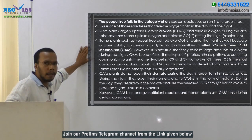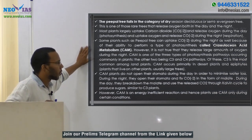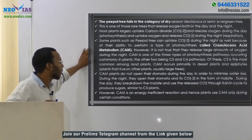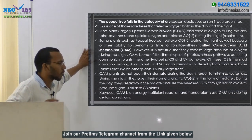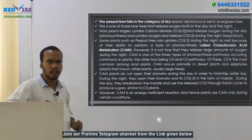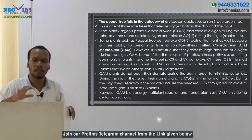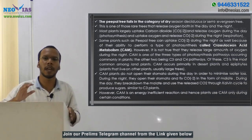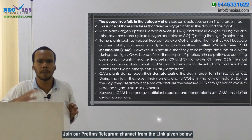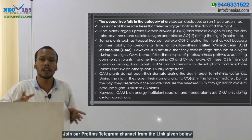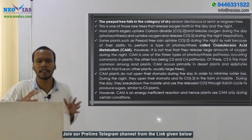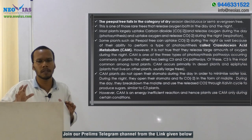CAM occurs primarily in desert plants and epiphytes. Epiphytes are plants that live on other plants, usually larger trees. The peeple tree is a kind of hemi-epiphyte plant, and that is why it also has the CAM mechanism — Crassulacean Acid Metabolism.